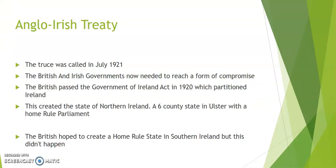When the truce was called in July 1921 the two sides needed to work out a formal agreement. This had to be done under the shadow of the Government of Ireland Act. The British government had passed this act in 1920 and it had divided Ireland — partitioned it — into two parts. One part had the six Ulster counties with a Home Rule Parliament in Belfast, called Northern Ireland, with James Craig as its first Prime Minister. The other part was called Southern Ireland and was to have a Home Rule Parliament in Dublin, though this Parliament never came into existence.